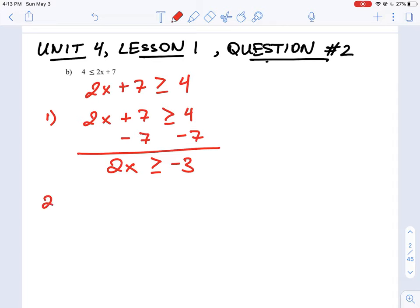Now our second step here is to remove the coefficient or the number in front of the variable term. So that is the number 2 in the 2x. To do that, we simply divide by the number that's in front of the variable. So just often show it by just doing a simple division sign like that. That cancels that out and we're left with x is greater than negative 3 over 2 or negative 1 and 1 half.